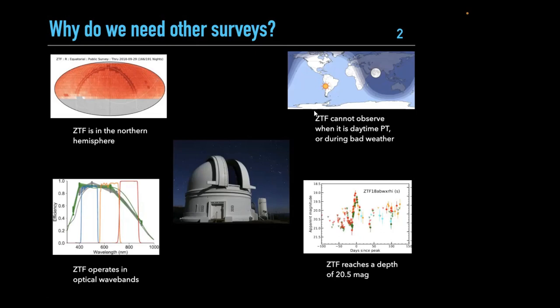You need telescopes at geographically different locations to increase your chances of detecting your favorite transient. ZTF is also a predefined survey reaching a depth of 20.5 magnitudes — anything fainter is not currently detectable. ZTF also has its own cadence of roughly every two to three days, so if you need a different cadence, you'd want your own survey telescope.